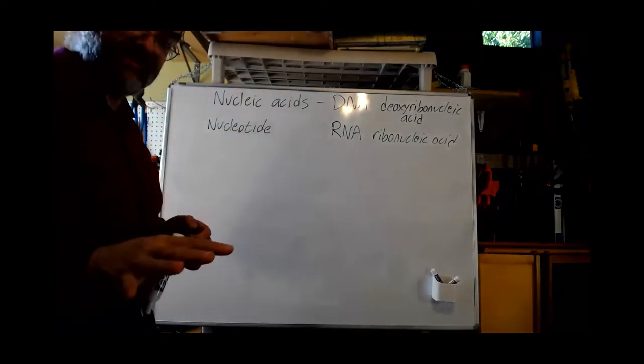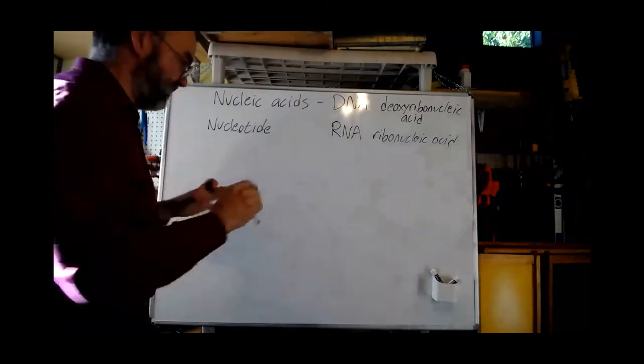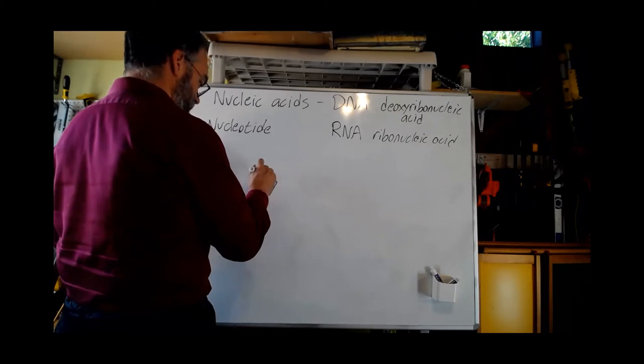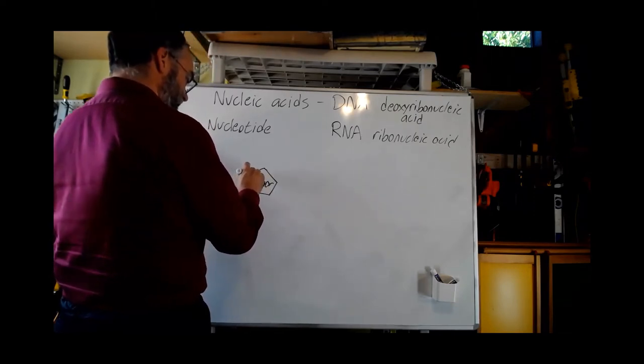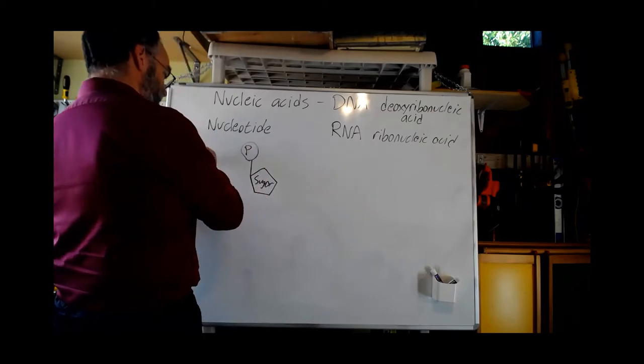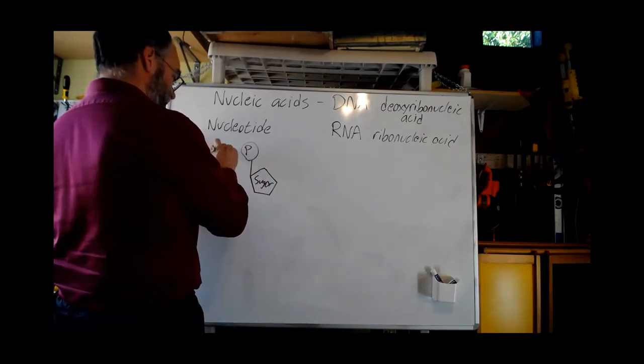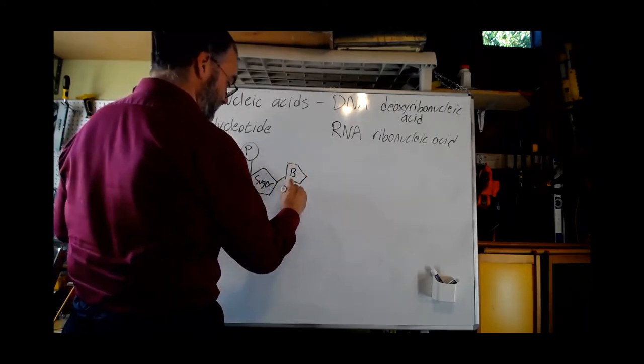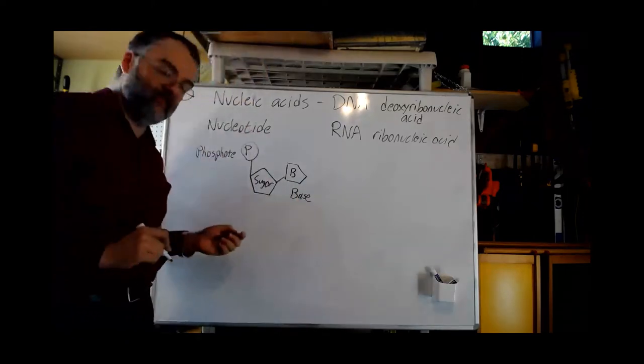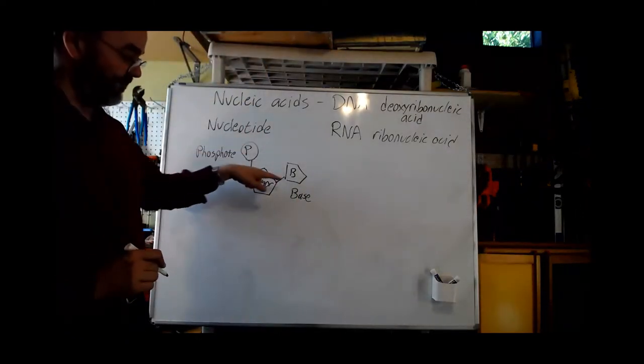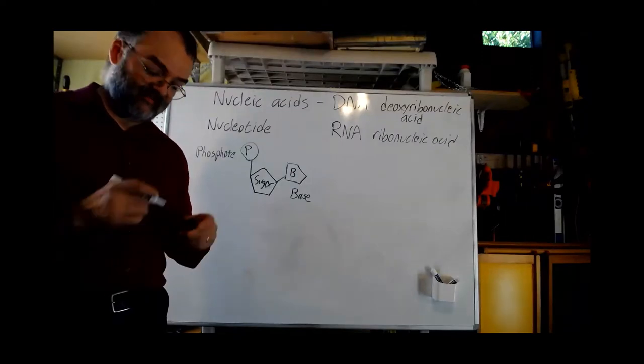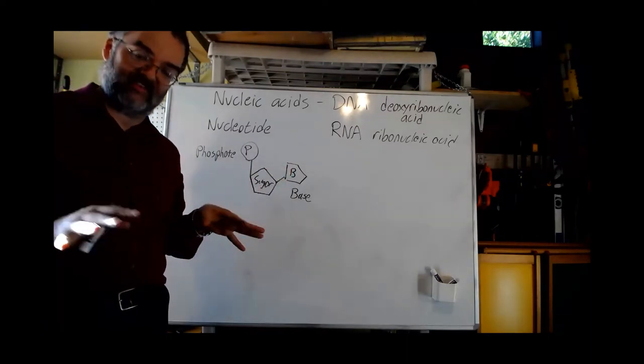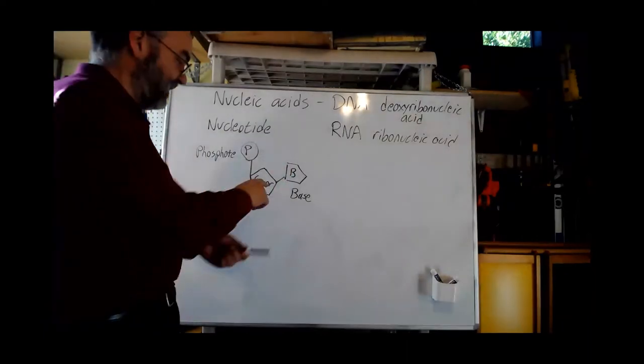So a nucleotide has a particular structure. The general idea is that it is a sugar attached to a phosphate also attached to a base. So phosphate, sugar, base. That's the basic concept of a nucleotide. I won't draw up the detailed structure of the base. They're a little more complicated. But I can draw this part up.